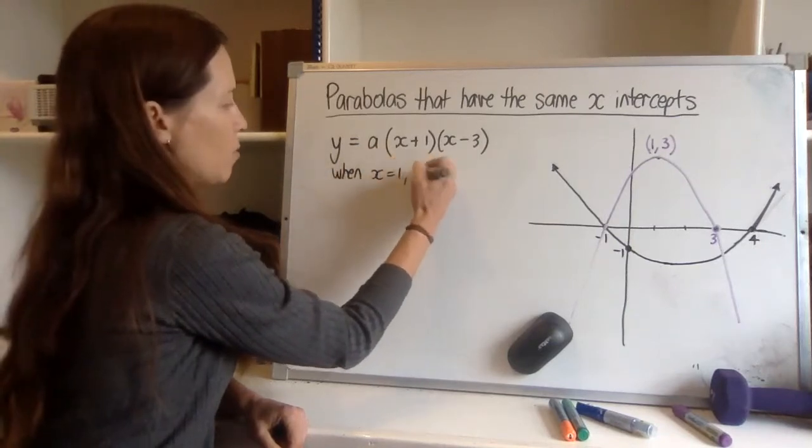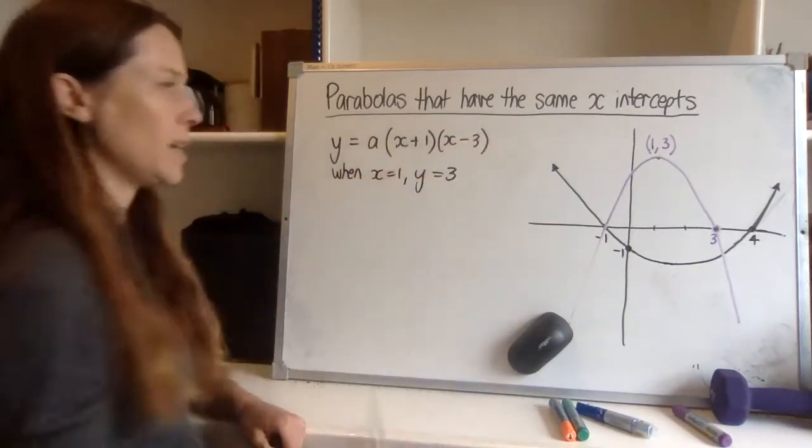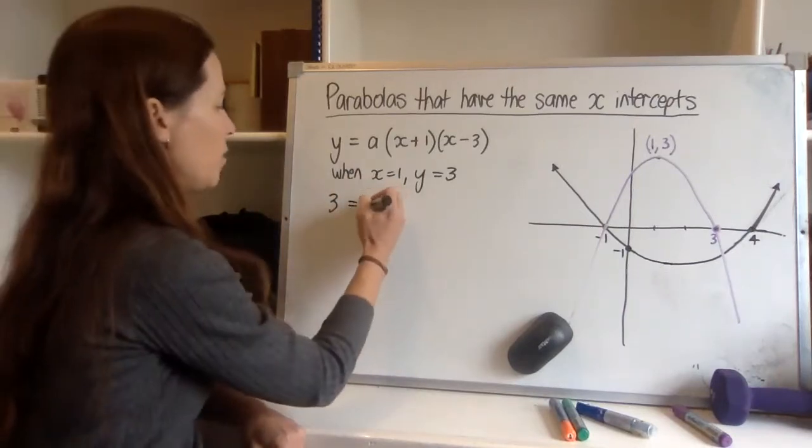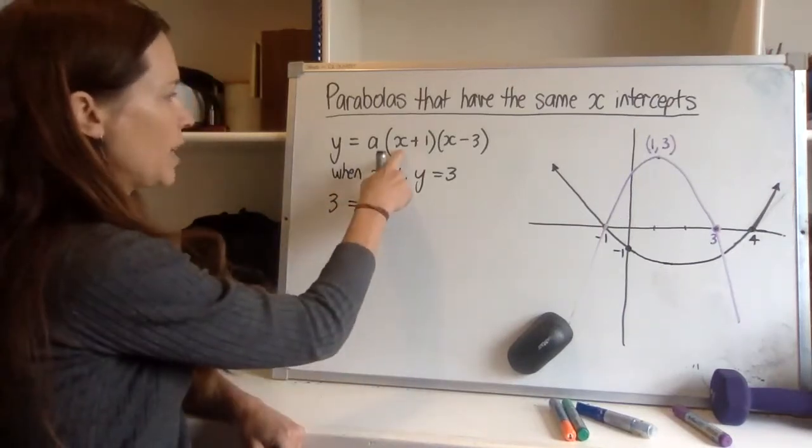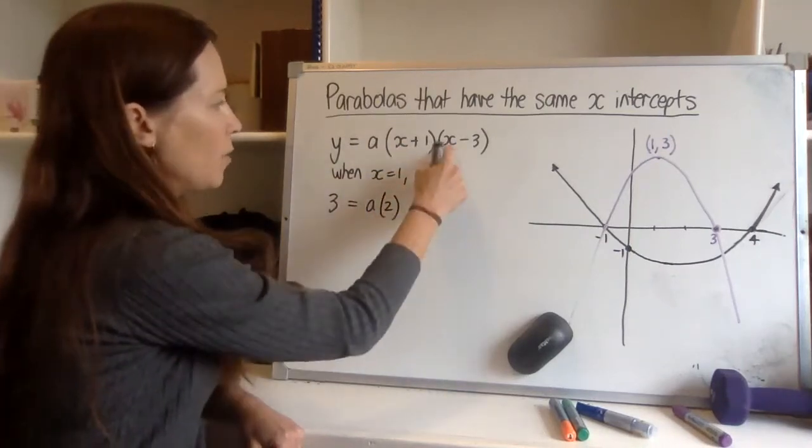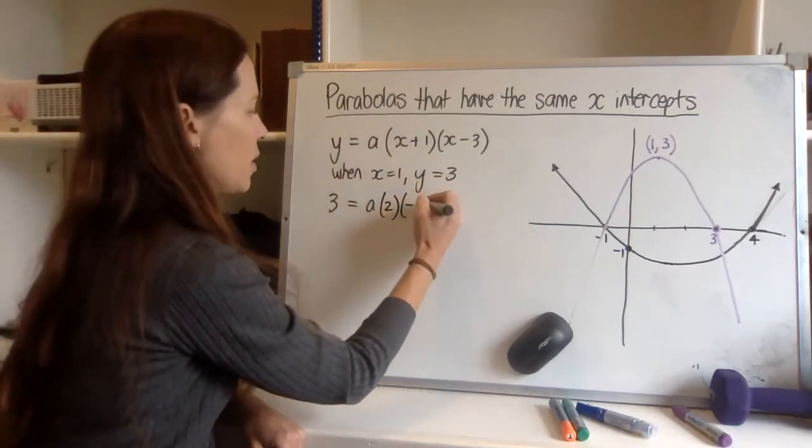Jot that down if you like: when x equals one, y equals three, and now sub it in. Let the y equal three and now we don't know what a is, just write that down, but we've got x being one. So one plus one, I can see that bit needs to be two, and one minus three, that bit is going to be negative two.